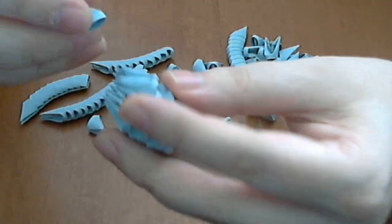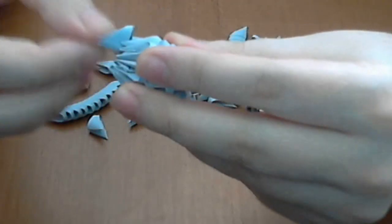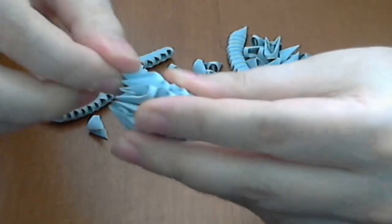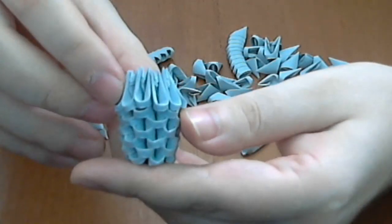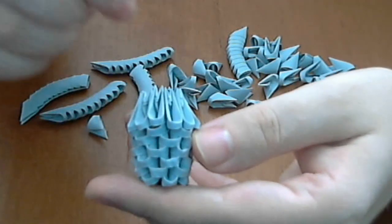And continue like this until you finish the row. Put a piece in every edge. In total, 12 pieces.